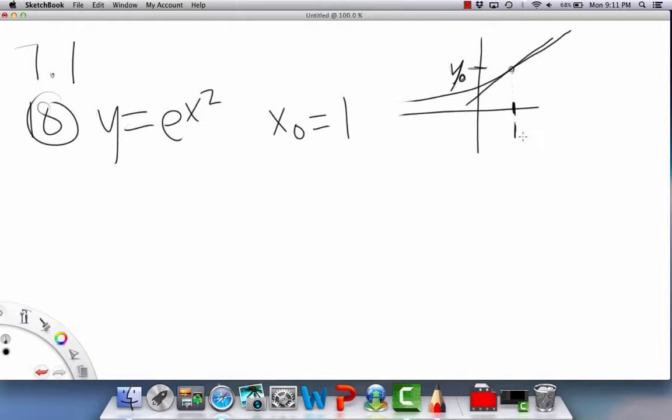That's funny, y₀. So 1 is our x₀, and that's our y₀. And then we also have to know the slope of the tangent line, which would be the first derivative evaluated at this point. So first of all, y₀ would be e to the x₀ squared. If you plug in 1, this would be e to the 1 squared, which just equals e. Okay, so we have that, and now we need the slope at that point.